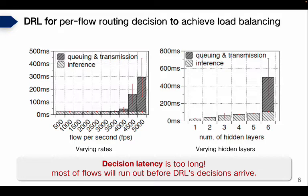The queuing and transmission time grows to 400 milliseconds when the DNN has six hidden layers. The reason is that a slower DRL inference process leads to more flows accumulating and waiting at the agent server for model inference scheduling. In summary, the decision latency of per-flow routing is too long, even with only one traffic server. Such long latency poses big barriers for large-scale deployment, as most flows in real data center traffic are short flows and could finish before their routing decisions arrive. This motivates our design.